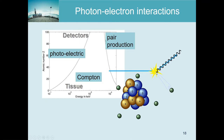Compton interaction involves an electron in the outermost shell, which is very loosely bound. Compton treated the interaction as if the electron were entirely free, and these loosely bound electrons are very similar to free electrons. The calculation is basically a billiard effect - an interaction with no deformation at all - so you only need conservation of energy and momentum, though relativistic corrections make the calculation a bit more complicated.